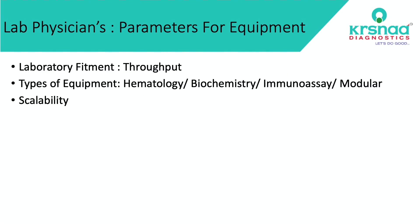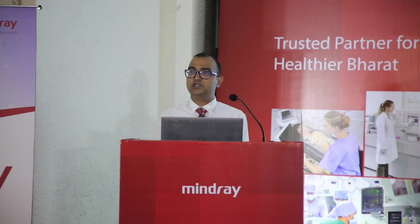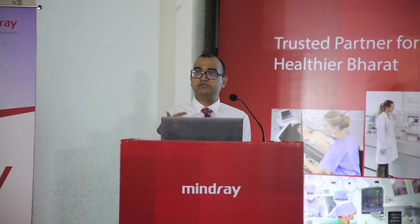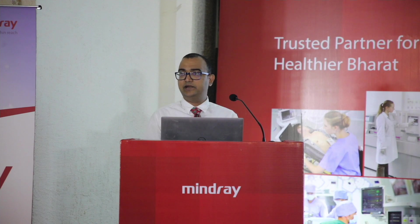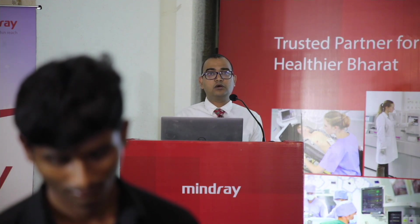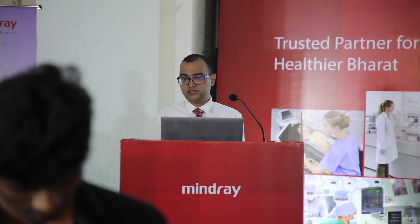Every laboratory is of different size, so what is the throughput of the equipment? Third is the test menu. In hematology, 10-15 years back there was only CBC, but now there are a lot of tests that have evolved to aid diagnosis of nutritional anemias and hemolytic anemias. In hematology, clinical chemistry and immunoassay, the wider the test menu the better it is.